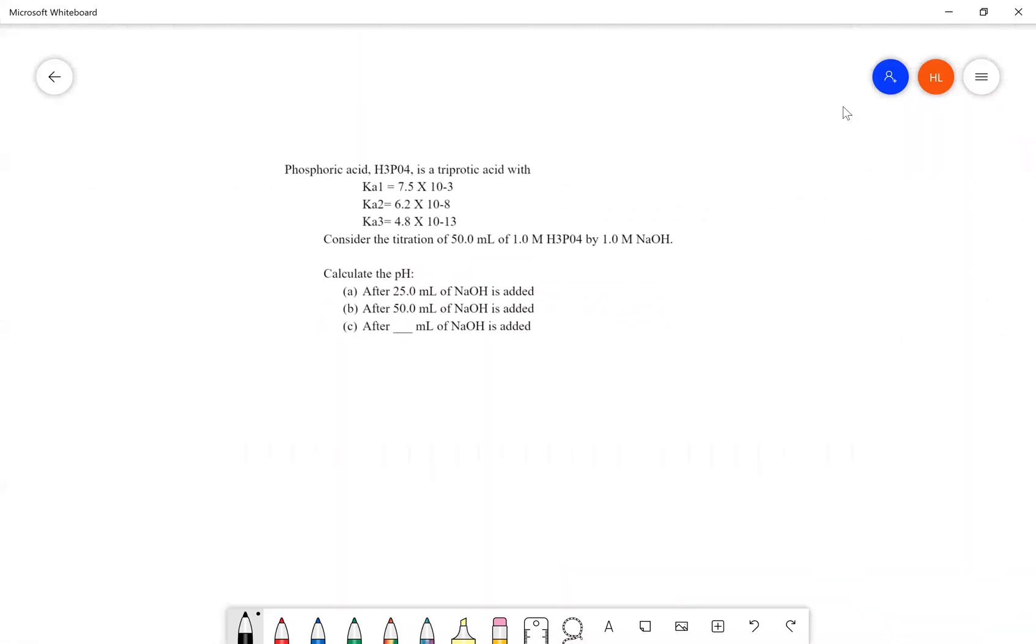So we have one question, and it's just about phosphoric acid, H3PO4. It's a triprotic acid with the corresponding Ka values, and we're considering the titration of 50 milliliters of this acid with a strong base, NaOH, and we're trying to calculate the pH at different points in time.